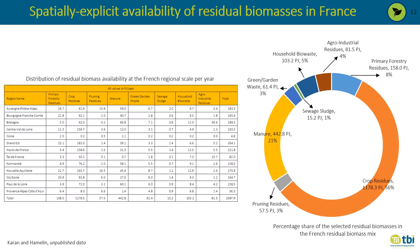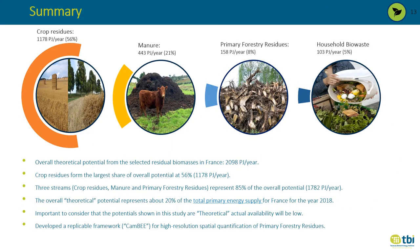The table shows the region-wise distribution of theoretical potential of different residual streams in France, and the graphic shows the percentage share in the French residual biomass mix. Crop residues represent the maximum share at 56%, followed by manure at 21%, and primary forestry residues at 8%. In summary, the overall theoretical potential from selected residual biomass in France was 2100 PJ per year, with three streams — crop residues, manure, and primary forestry residues — representing about 85% of the overall potential. This corresponds to about 20% of the total primary energy supply for France for 2018.